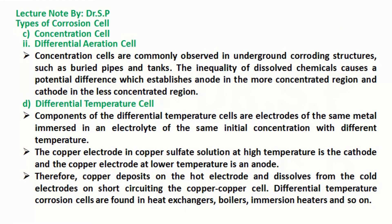Differential temperature corrosion cells are found in heat exchangers, boilers, immersion heaters, and similar equipment.